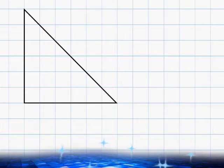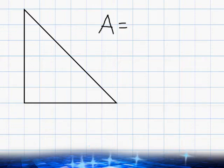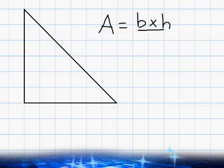So we have to use the graph paper that the triangle is superimposed over to figure out what the length of the base is and what the length of the height is. So what we're going to do first is state our formula which is A equals the base of the triangle multiplied by the height of the triangle divided by 2.